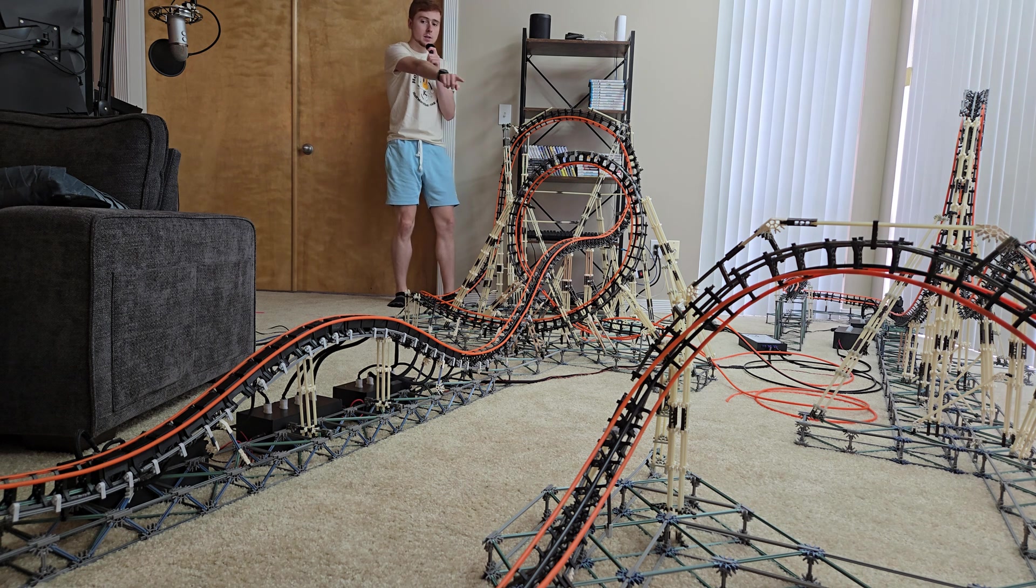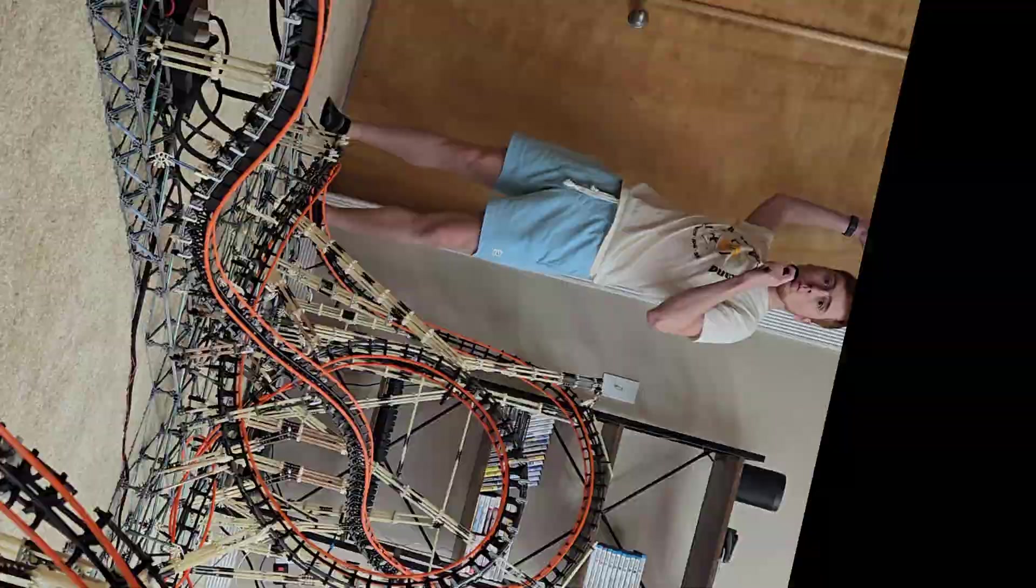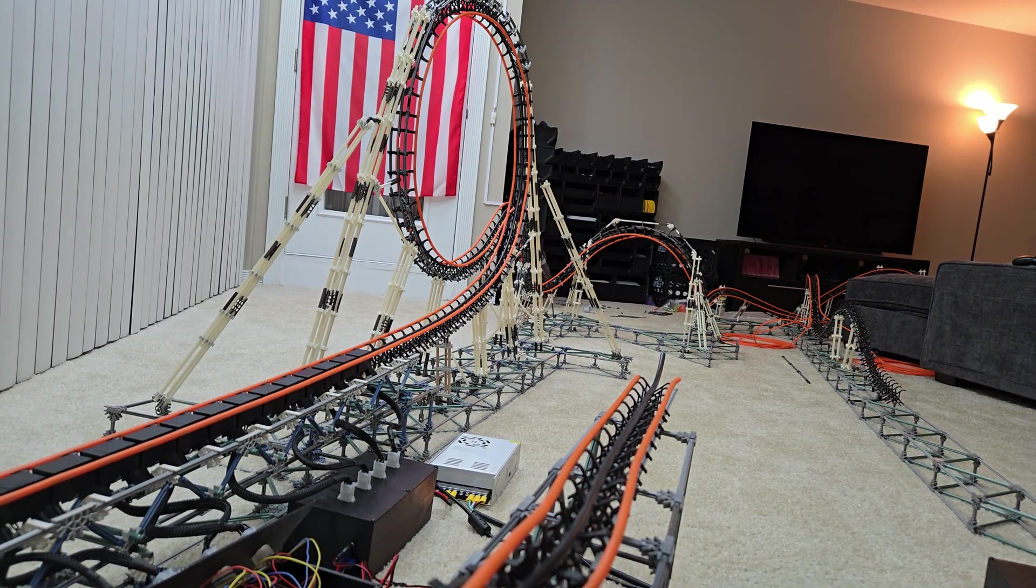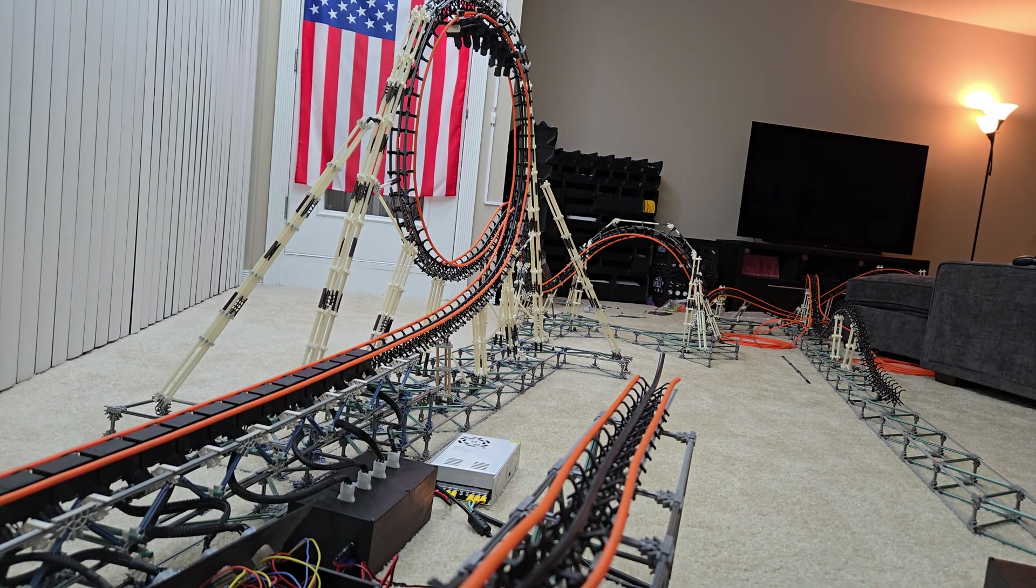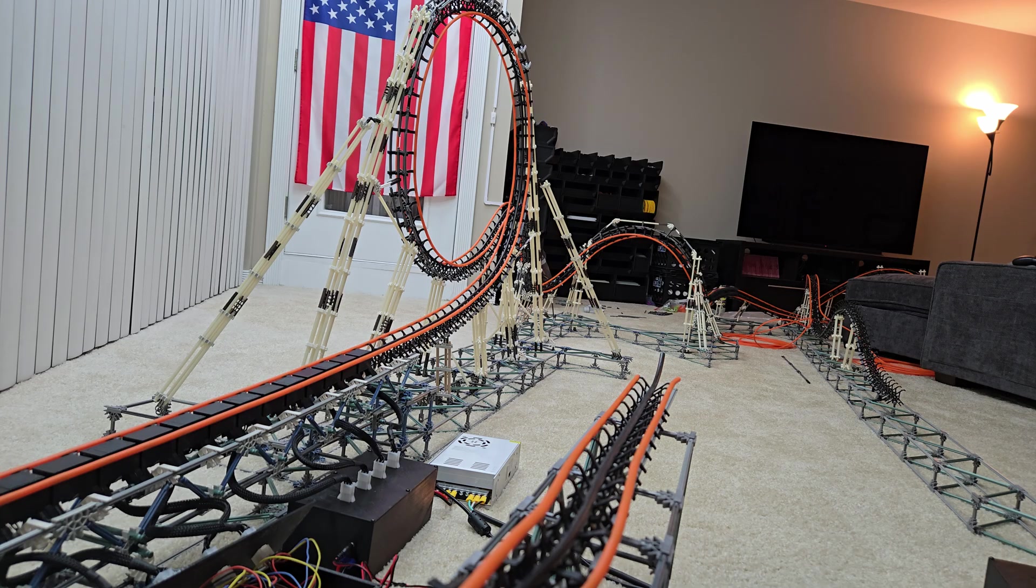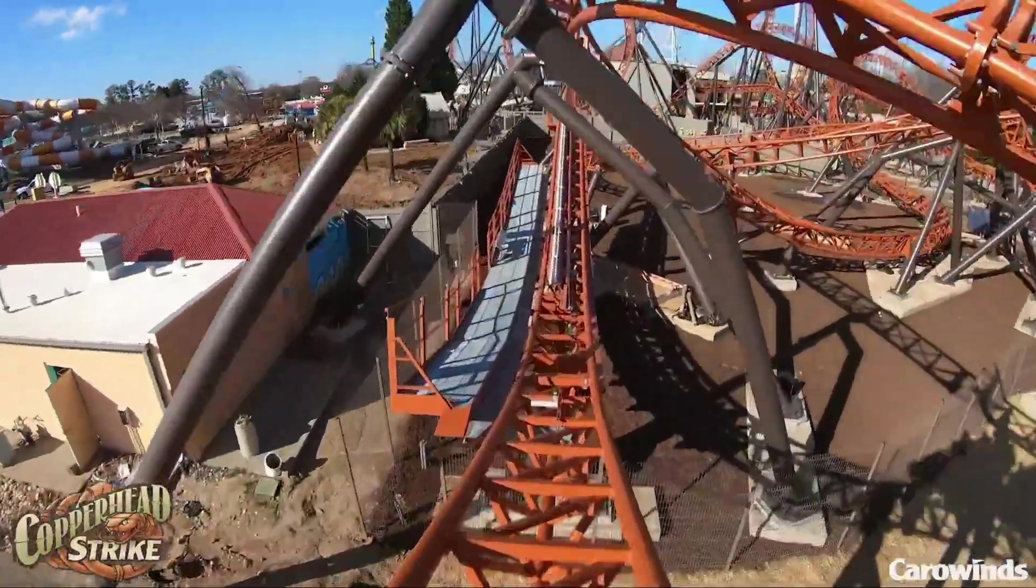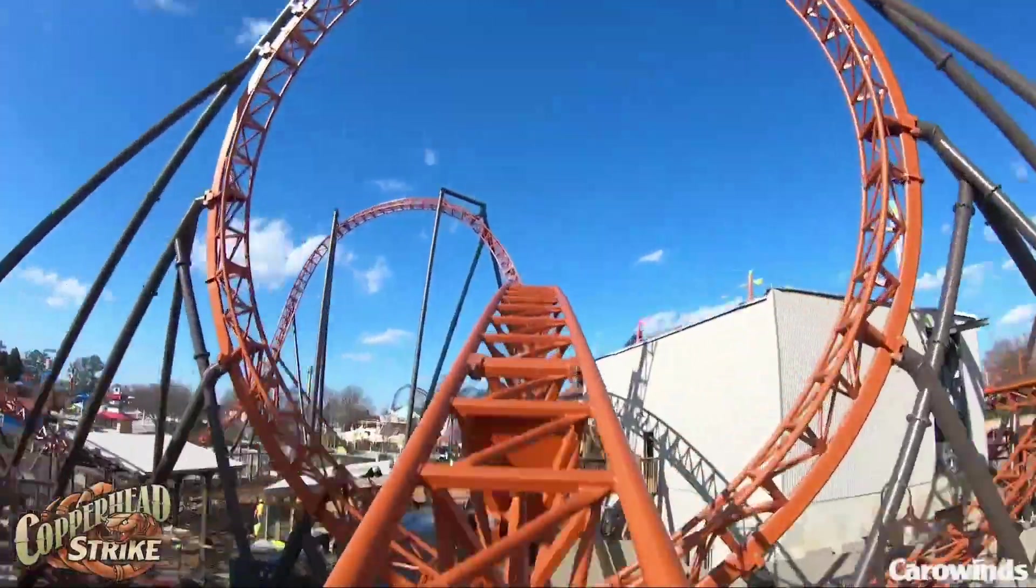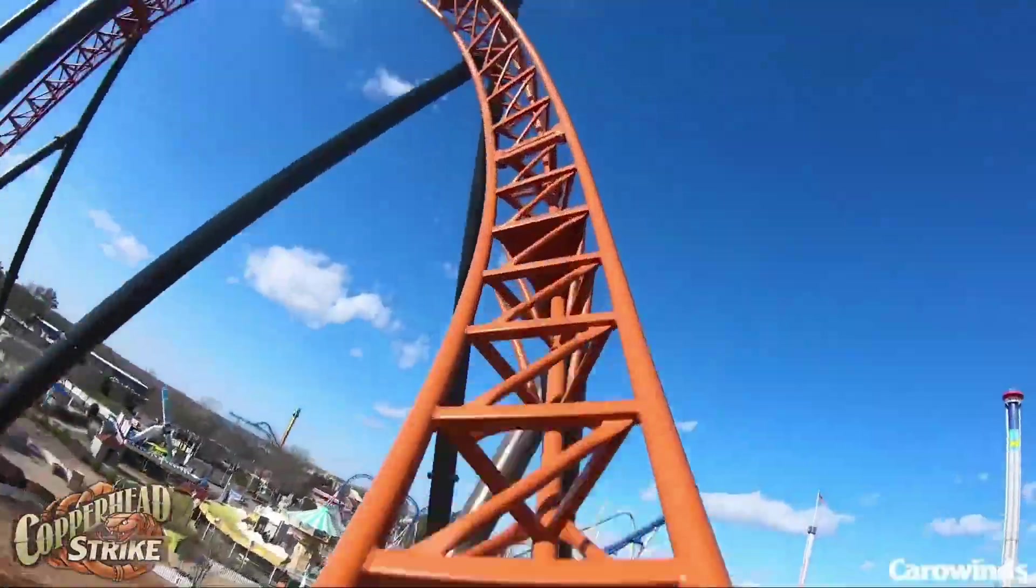Okay, it's time for the next update. I built this, this, and a curvy launch. Here we go! Alright, let's get you up to speed. I'm building Copperhead Strike at Carowinds. In the first couple of videos, we built this magnetic launch that barely gets over this first loop, which is exactly what the real roller coaster does. Now, it's time to build a first-of-its-kind curvy launch, which we can see the real ride also has.